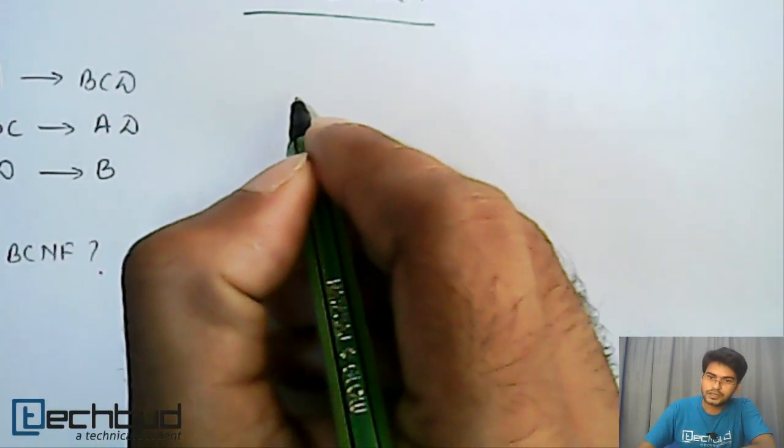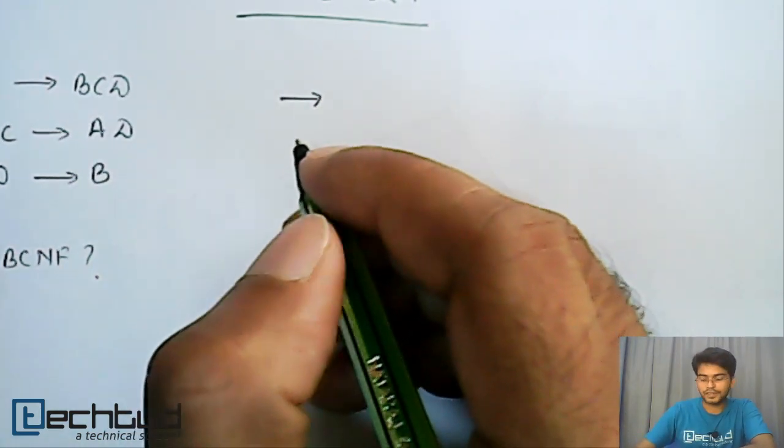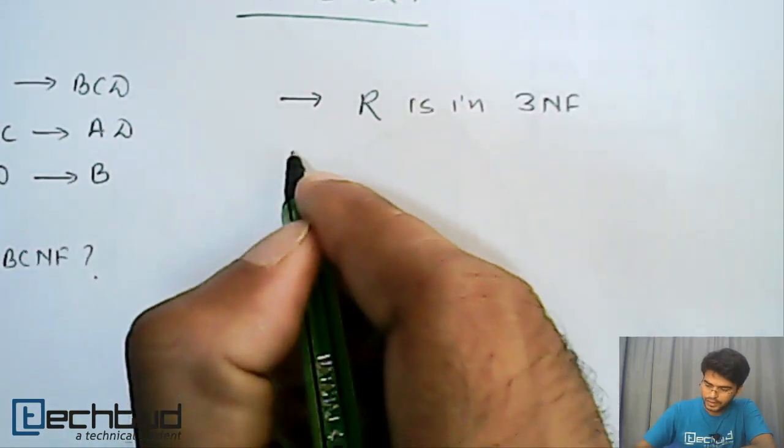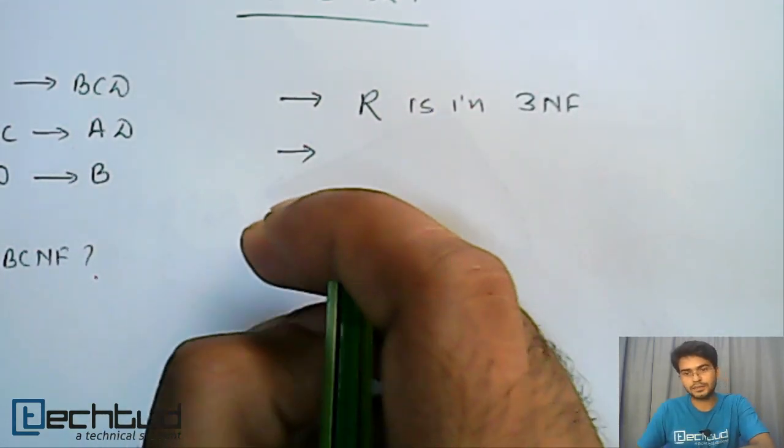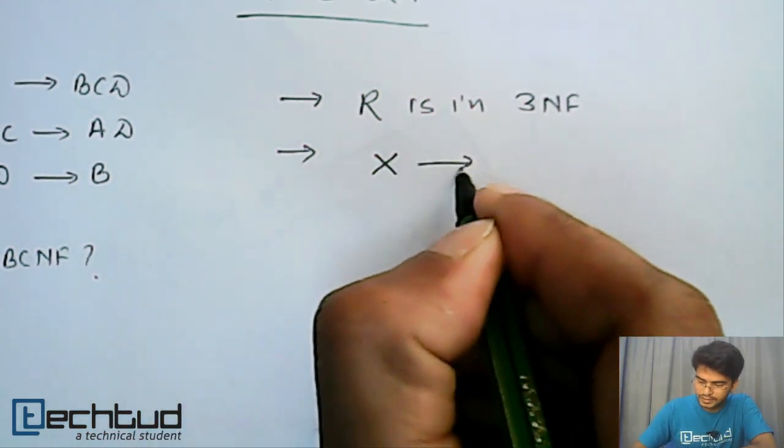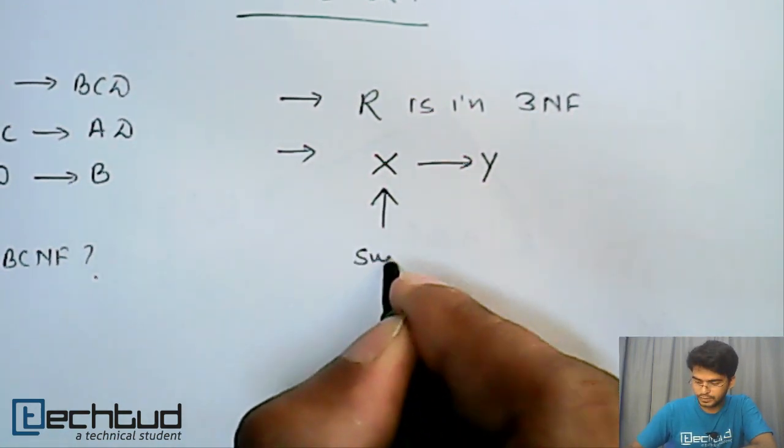So the condition is that it should satisfy all the conditions up to 3NF, that is the relationship should be in 3NF, and the next restriction which we are increasing in this BCNF is for each functional dependency X determines Y, this X should be a super key.